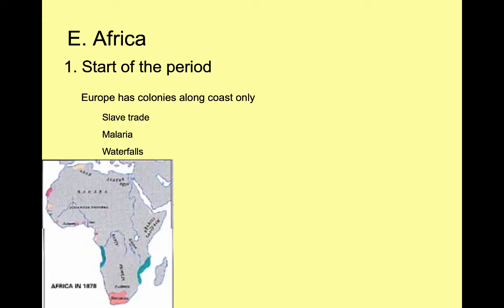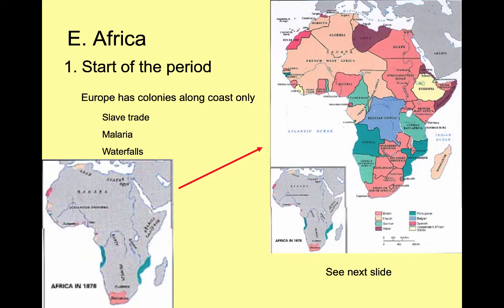The Europeans really had no way of getting inside Africa because you can't sail up waterfalls. So Africa became known as the 'dark continent' because the inside of it was unknown to white people. We really didn't see lots of colonization going on in Africa from 1450 to 1750. However, looking at the next map, we see that by 1900 — the end of this time period — Africa is completely colonized.